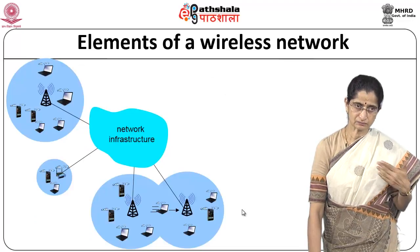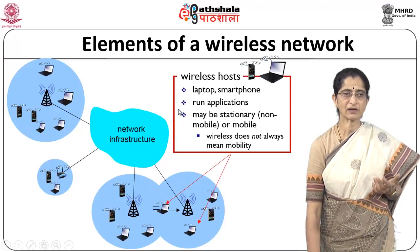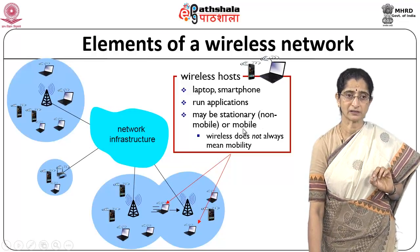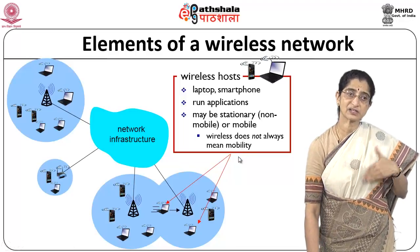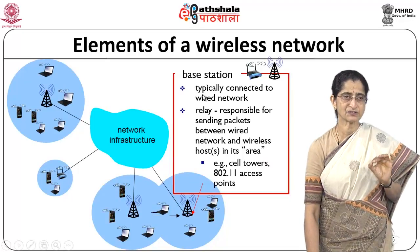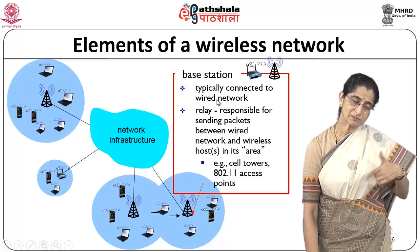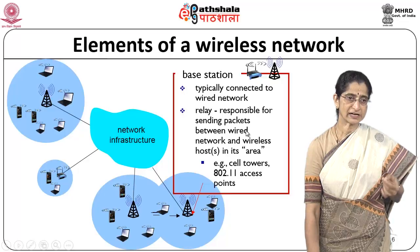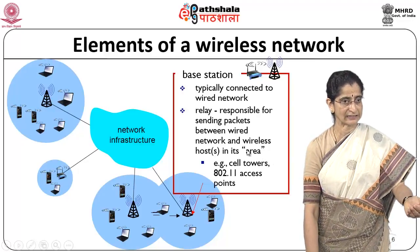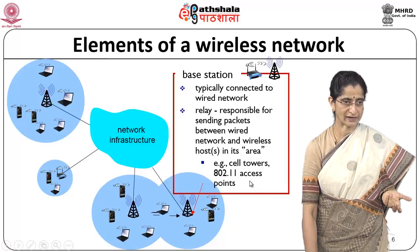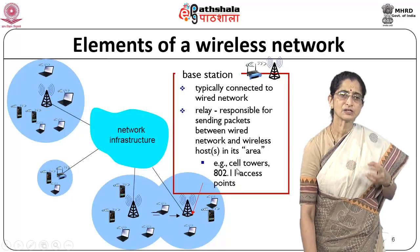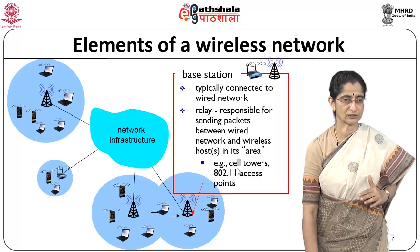If you look at the elements of a wireless network, we have wireless hosts such as laptops and smartphones, which would typically be running applications. They may be stationary or mobile. Remember, wireless does not always mean mobility — it could be a stationary device connected by a wireless connection. We also have central devices called base stations, which are connected to a wired network. They are responsible for sending packets between the wired and wireless networks, such as cell towers or 802.11 access points.